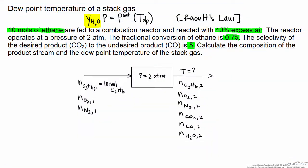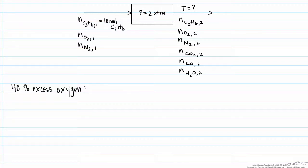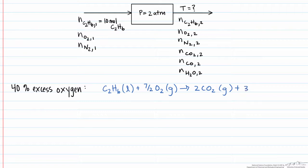Let's start with a flowchart of our process. We'll start by figuring out how much oxygen, and therefore nitrogen, comes into our system. We're told that there is 40% excess oxygen. In order to solve for that, we have to write the combustion reaction. So we have C2H6, which reacts with 3.5 moles of O2, and that gives us 2 moles of CO2 plus 3 moles of H2O. Note that the incomplete combustion reaction is not included, as excess oxygen is always based on the desired reaction.